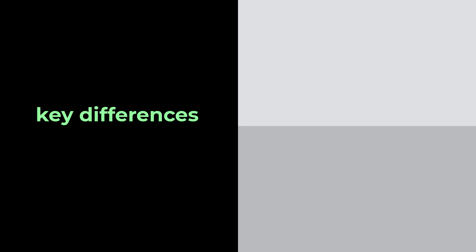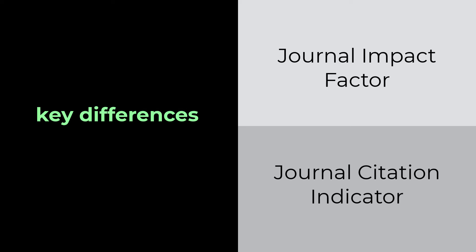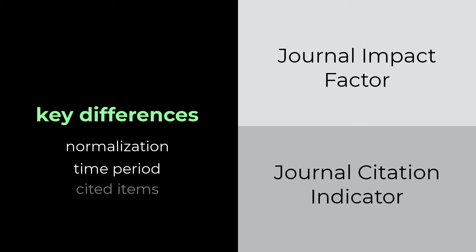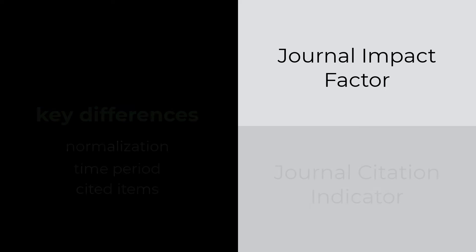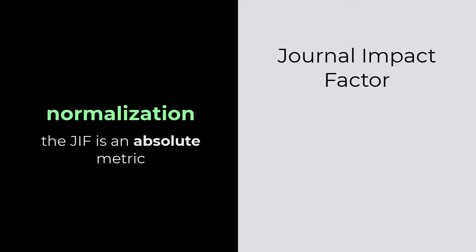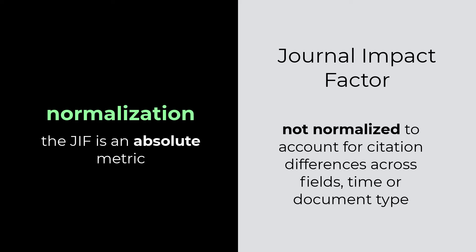There are a few key differences to focus on when comparing the JIF and the JCI: normalization, time period, and cited items. The JIF is an absolute metric, meaning it has not been normalized to account for differences in citation behavior across research disciplines, time, or document type.